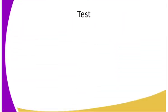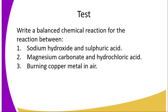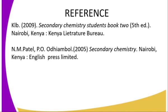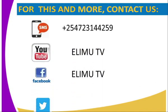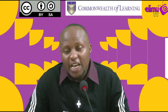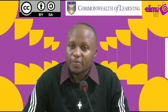Now let's answer the following practice questions: write a balanced chemical equation for the reaction between sodium hydroxide and sulfuric acid; magnesium carbonate and hydrochloric acid; and burning copper metal in air. You can refer to this concept in Secondary Chemistry Students Book 2. Send us an SMS or visit our YouTube or Facebook page at Elimu TV, or tweet us at @ElimuTV_KE. Thank you.